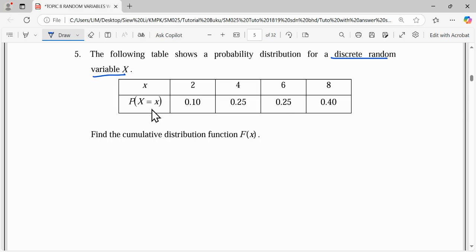This probability represents their own corresponding probability P(X=x). What we need to find is the cumulative distribution function F(x). Cumulative means the collective probability, so we need to add on.